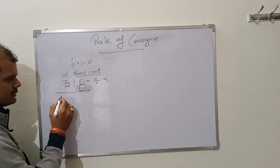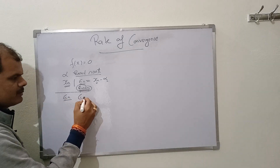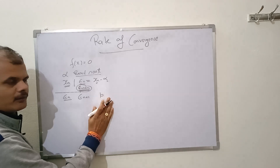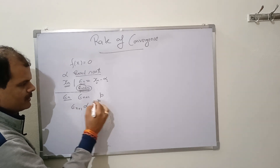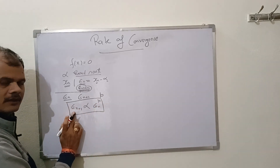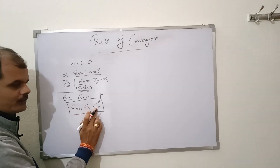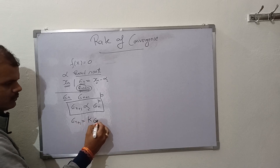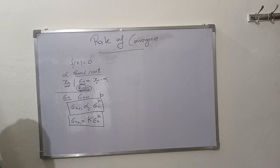What is the rate of convergence? If epsilon_n is the error of the nth iteration and epsilon_(n+1) is the error of the (n+1)th iteration, then the number p is called the rate of convergence if epsilon_(n+1) is directly proportional to epsilon_n to the power p. If you remove the proportionality constant, we can write epsilon_(n+1) = k · epsilon_n^p. If you keep this form for any numerical method, we can say p is the rate of convergence.